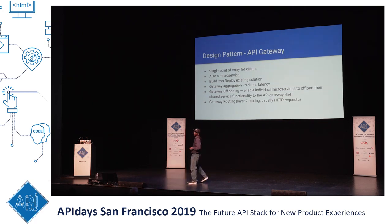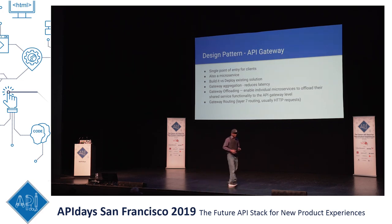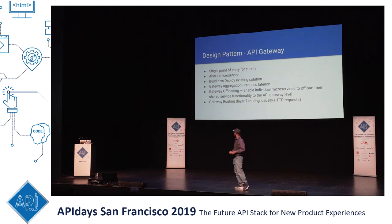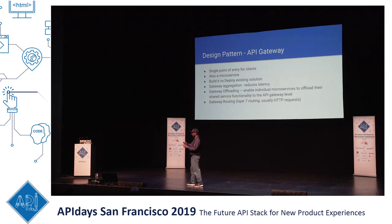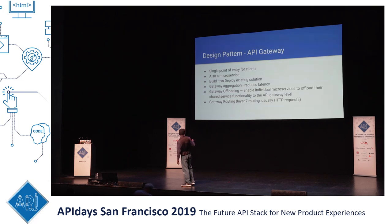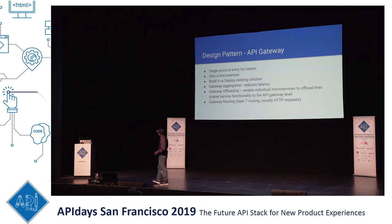By using an API gateway, you are reducing latency through gateway aggregation. Your client doesn't have to reach different machines to get the information they need. Instead of traditionally having a client talk to point A, B, C, D, and E, you can have your client talk to the gateway. The gateway talks to A, B, C, D, and E without the client needing to know. That reduces latency because you have one single point of entry.